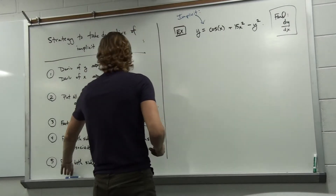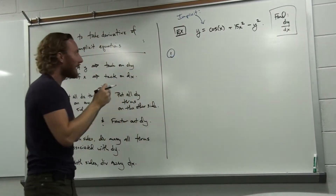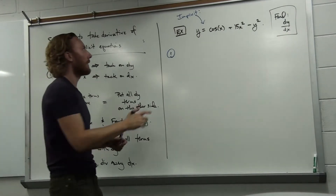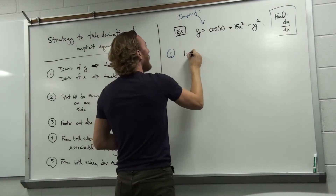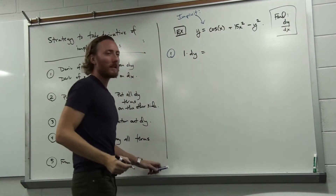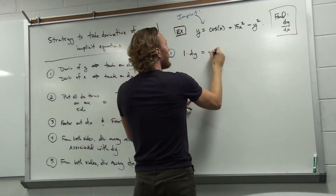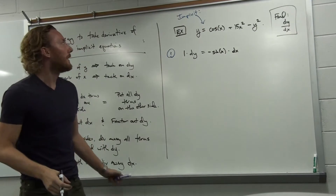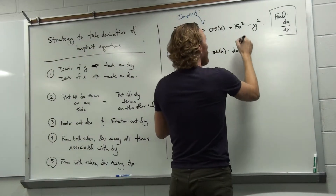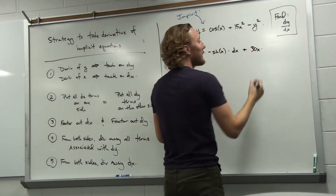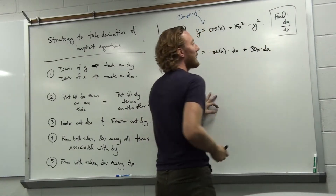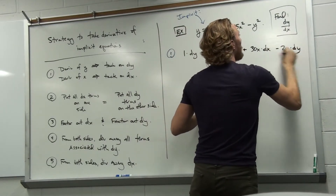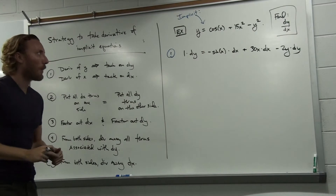First step: we're just going to take the derivative, tacking on a dy every time we take the derivative of a y, and tacking on a dx every time we take the derivative of an x. So y, derivative: 1 dy, since we took the derivative with respect to y. Cosine x, derivative: minus sine x, tack on a dx. The 15x squared term gives 30x, tack on a dx. And lastly, that y squared term gives minus 2y, and since we took a derivative with respect to y, we tack on a dy.